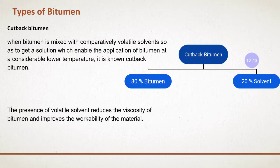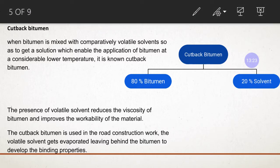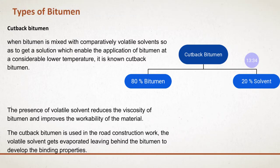The presence of volatile solvent reduces the viscosity of bitumen, making it more liquid and improving workability so you can work with it properly. In road construction works, the volatile solvents evaporate leaving behind the bitumen, which then develops its binding properties to bind the material together.